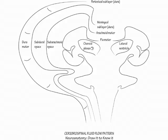Choroid plexus is found within the central portion of the ventricular system, so it is not found in the frontal or occipital horns, and it is also not found in the cerebral aqueduct. This is important to neurosurgeons when they place drains into the ventricular system.